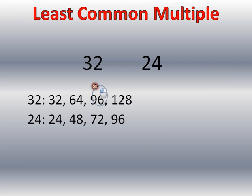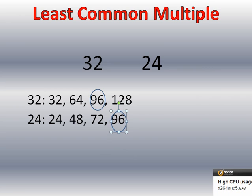As you see, I have a common multiple here at 96. And since there are no numbers smaller than 96 that these two numbers share, my least common multiple is 96.